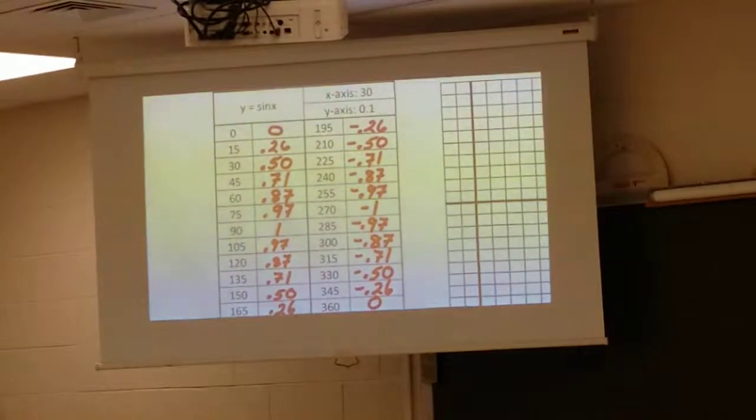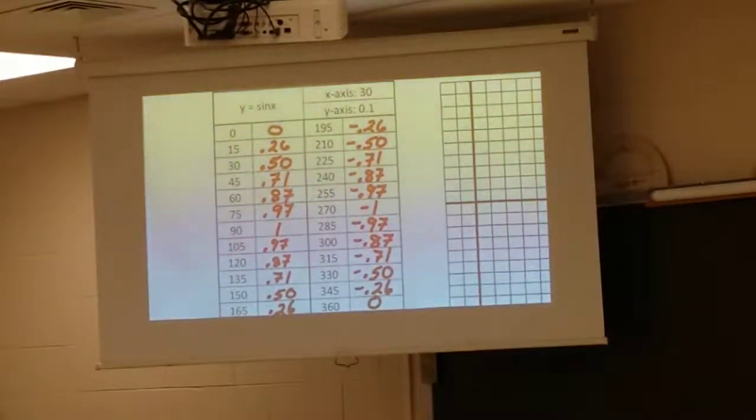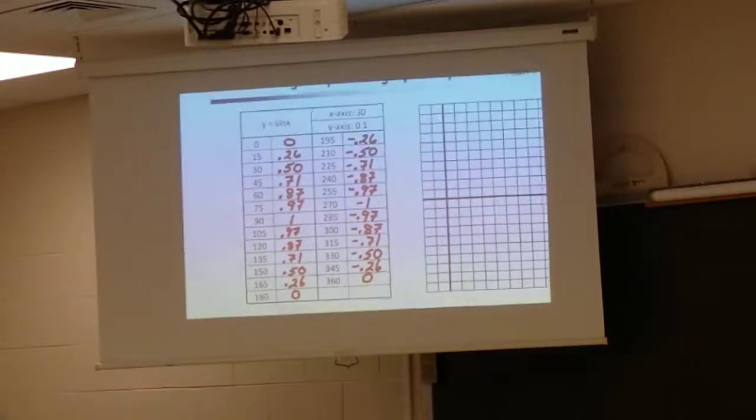Look at the X values. This might seem kind of simple, but it's important to notice right away. The X values are angles. And then again, the Y values, those are these points on the unit circle. So you're actually graphing angles and points from the unit circle.